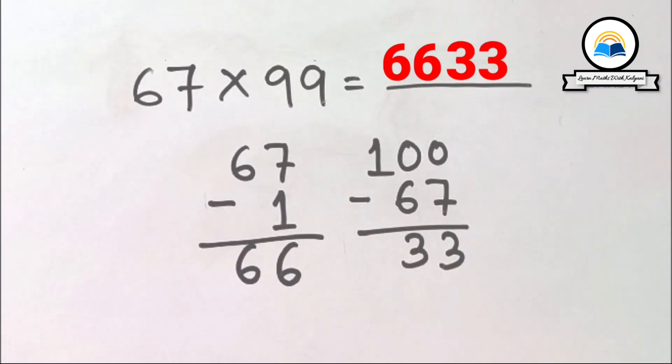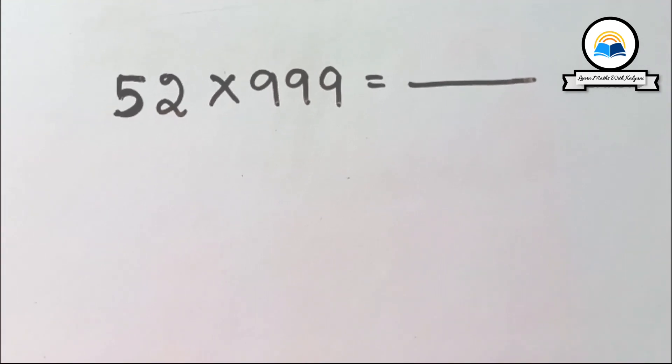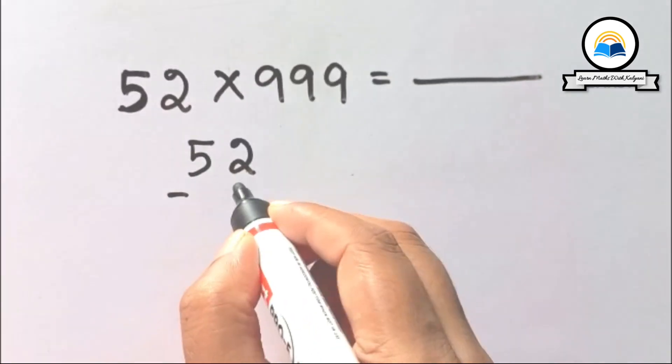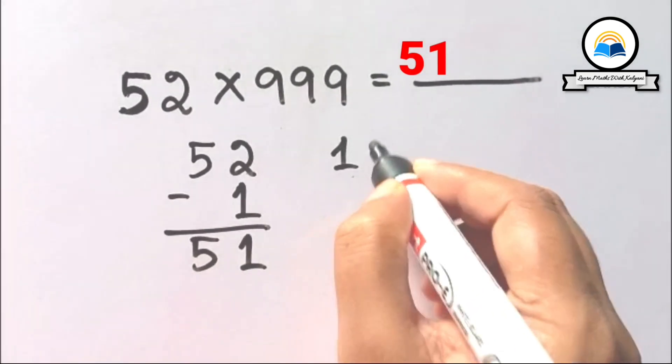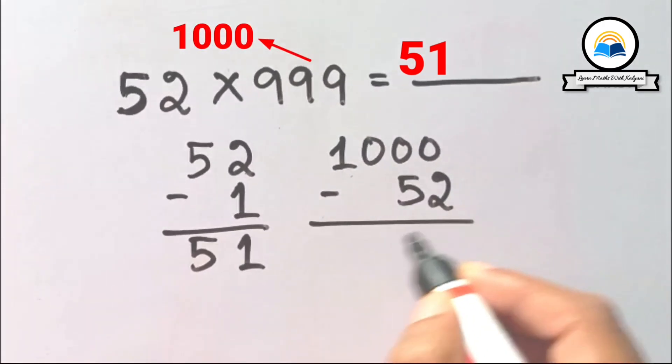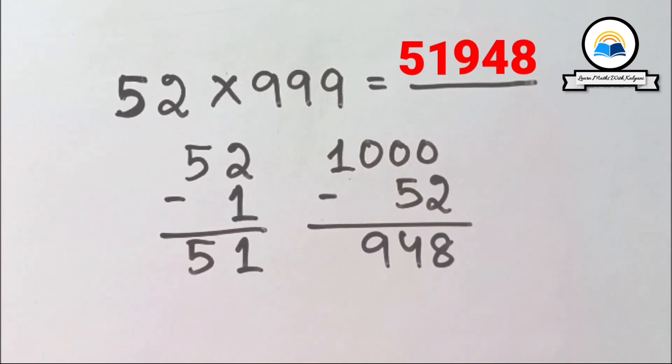Let's do another example: 52 times 999. 52 minus 1 equals 51. Successor of 999 is 1000. 1000 minus 52 equals 948. So the answer is 51,948.